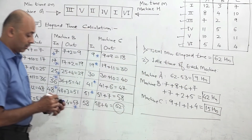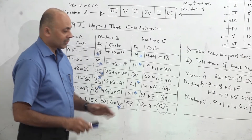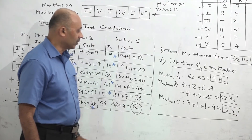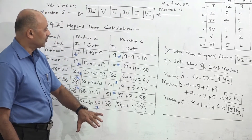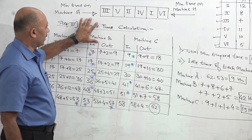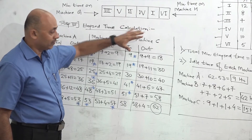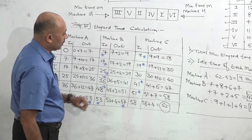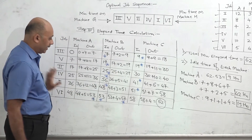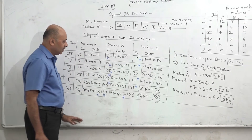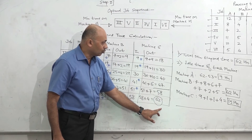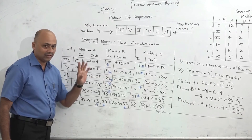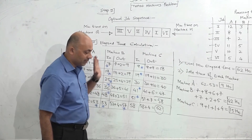So our solution is now complete. We converted a 3-machine problem into a 2-machine problem with fictitious machines G and H, found the optimal job sequence 3-5-2-4-1-6, then referred back to original values to calculate elapsed time of 62 hours, and idle times: machine A = 9 hours, machine B = 42 hours, machine C = 15 hours.